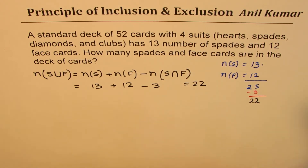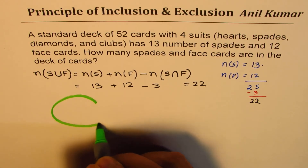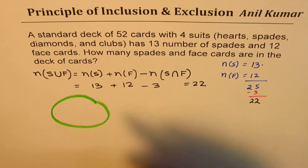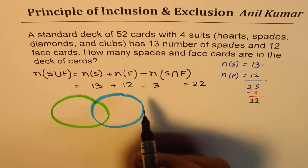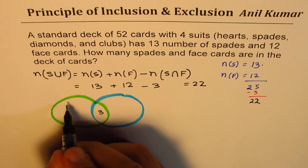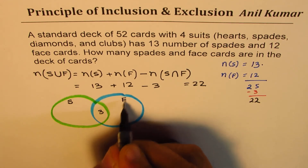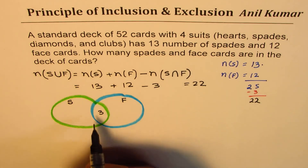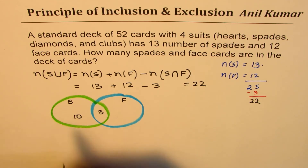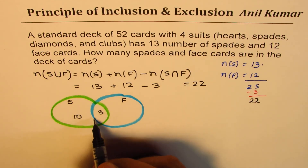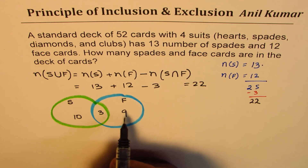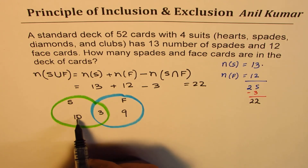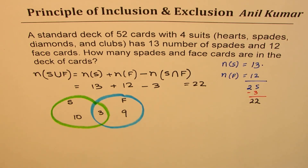The other way is to draw a Venn diagram. Let's say this circle is for spades and this is for face cards. There are 3 common cards, so we write 3 in the intersection. Spades is 13, 3 are common, so 10 are left outside the intersection. Face cards are 12, 3 are common, so 9 are left. If you count all of them: 9 plus 3 is 12, plus 10 is 22. A Venn diagram also helps you visualize and get the solution.